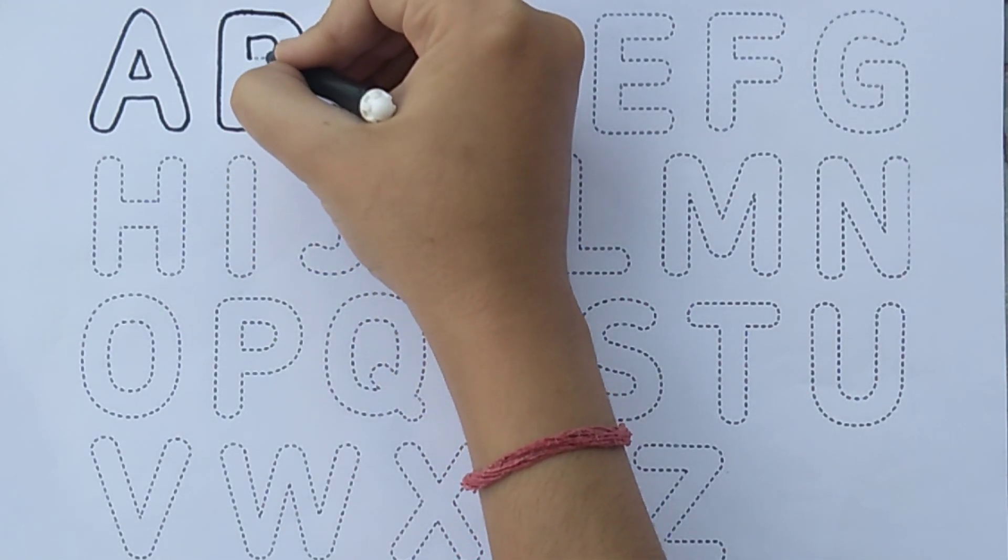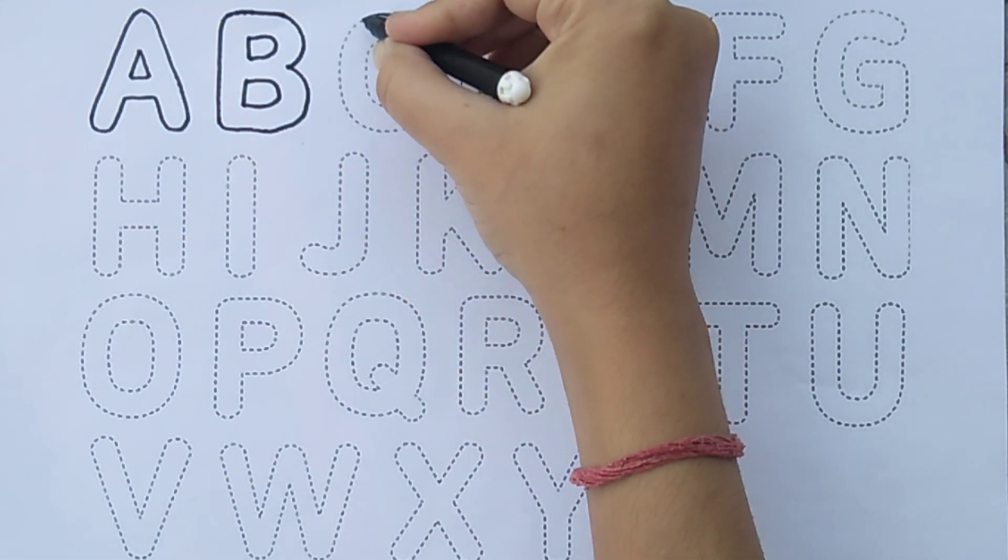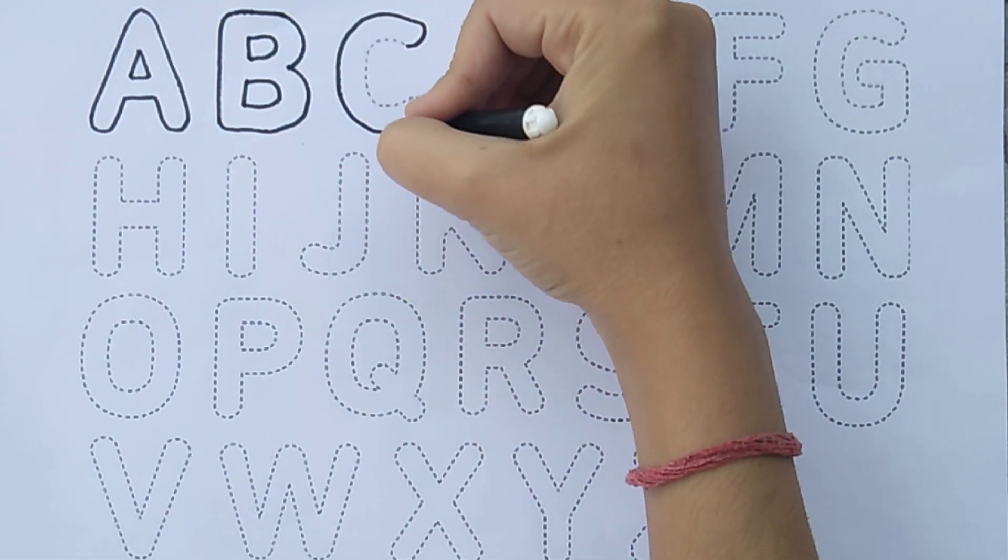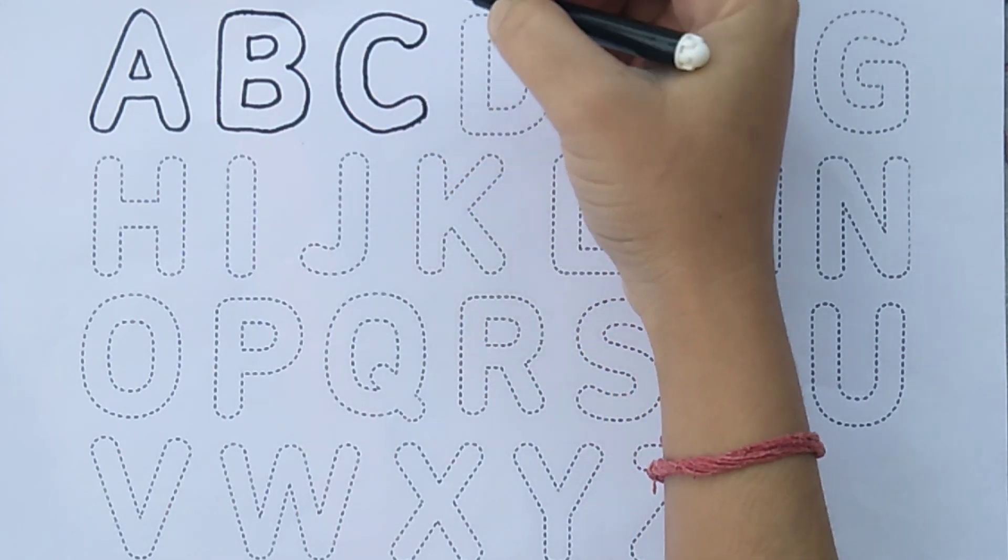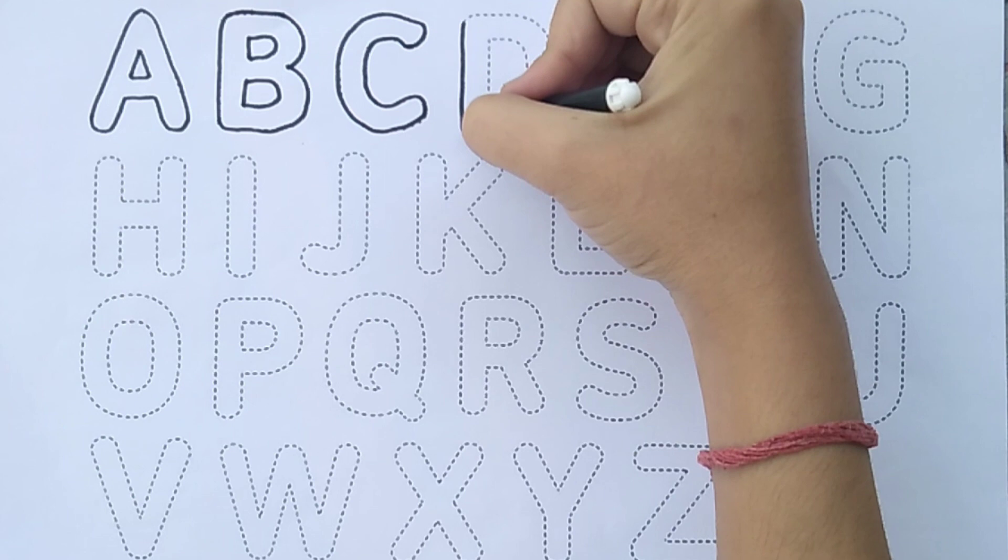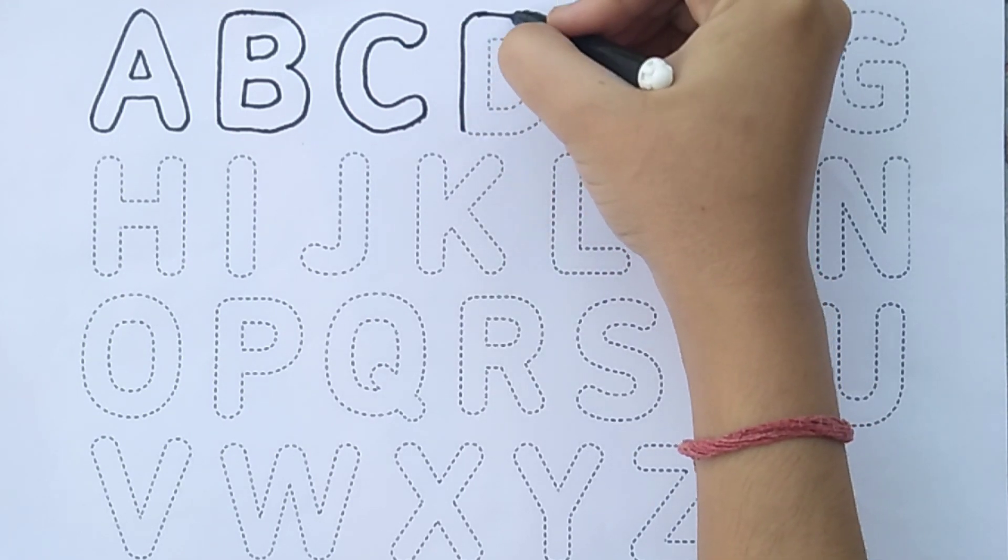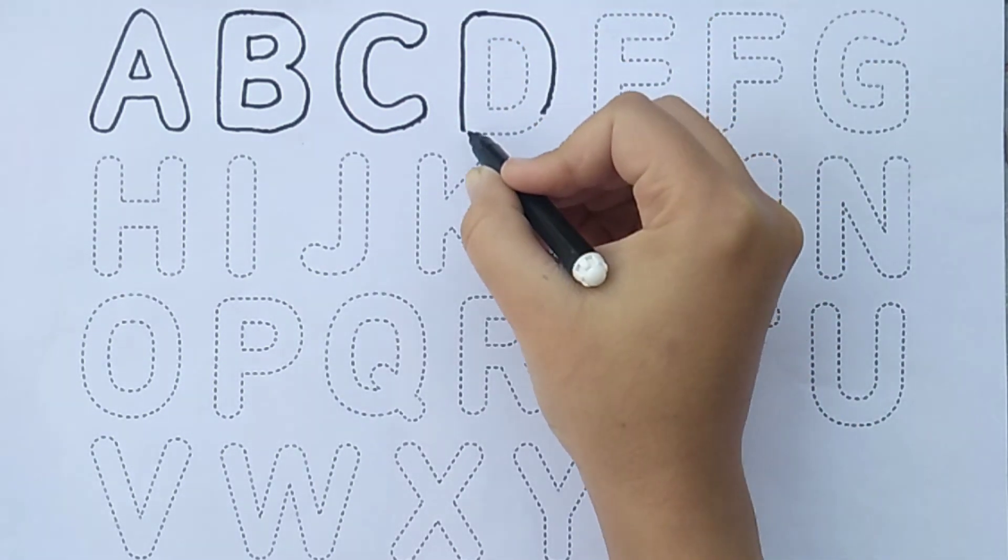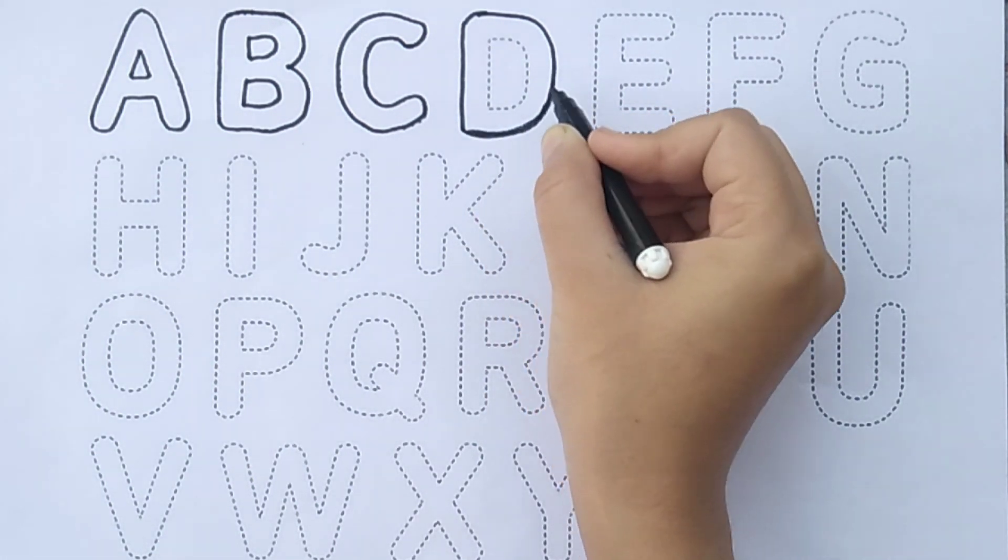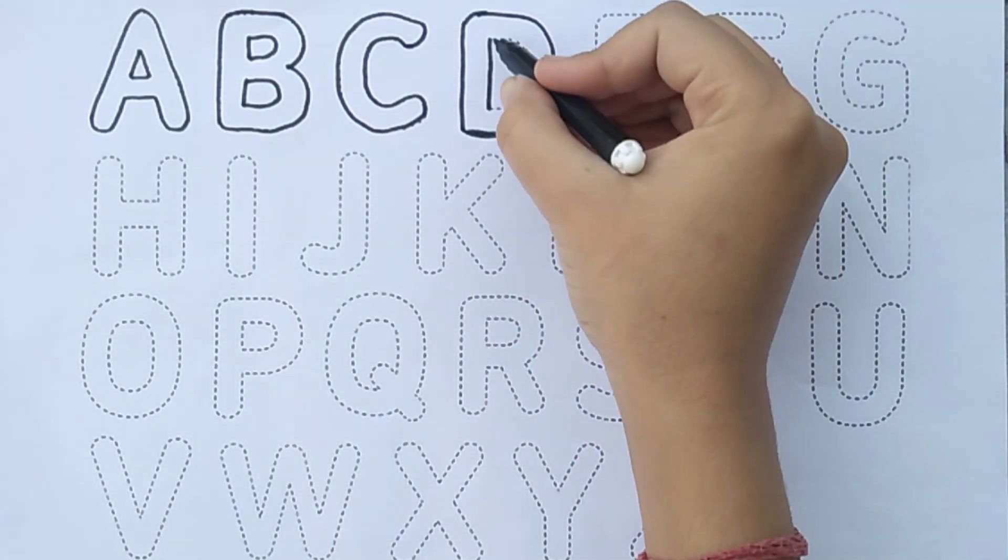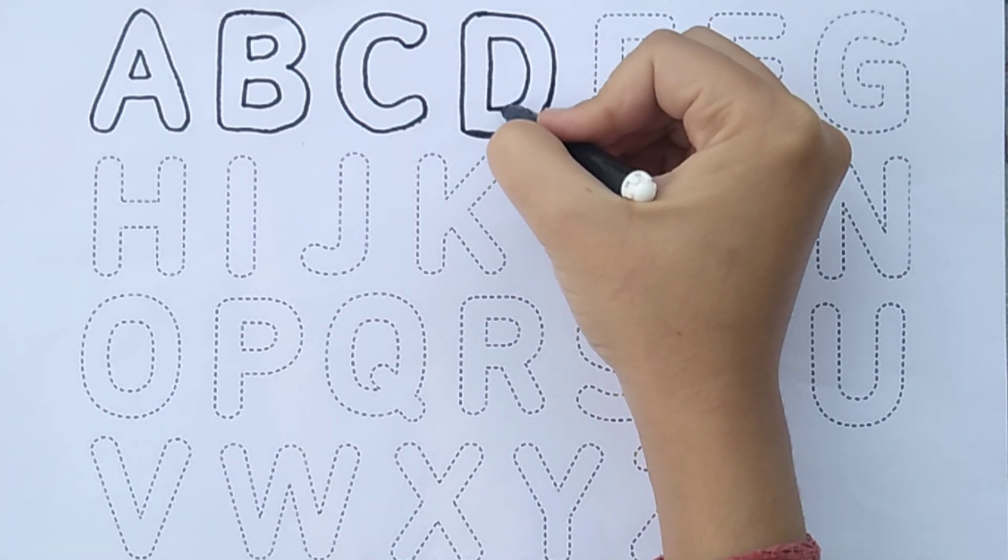Letter B. Letter C. A tisket, a tasket, a green and yellow basket. I wrote a letter to my love and on the way I dropped it. Dropped it, I dropped it. And on the way I dropped it. Letter D.